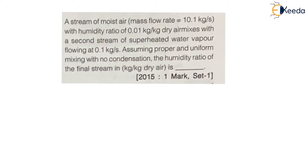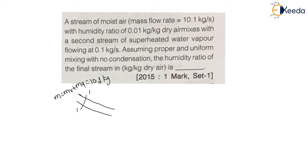The question states: a stream of moisture has a mass flow rate of 10.1 kg per second. Here they have provided one stream — let us call it Stream 1. The total mass is nothing but mass of vapor plus mass of air, given as 10.1 kg per second. Since it is moist air, it is always a mixture of vapor and air.